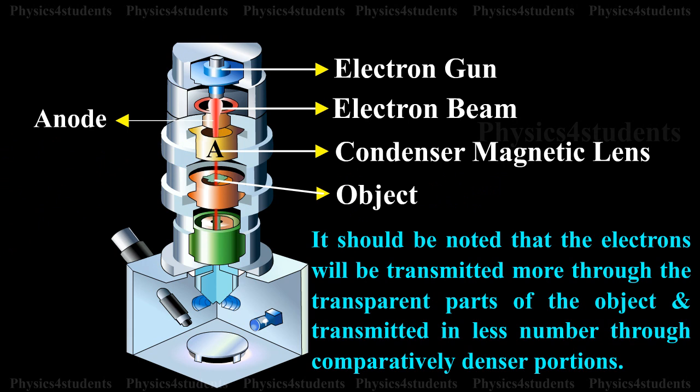It should be noted that the electrons will be transmitted more through the transparent parts of the object and transmitted in less number through comparatively denser portions.